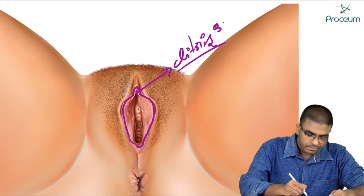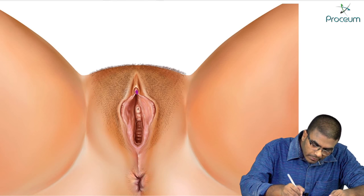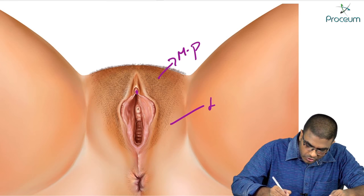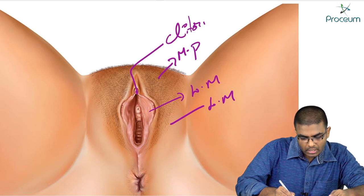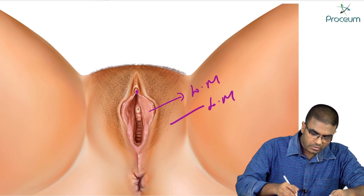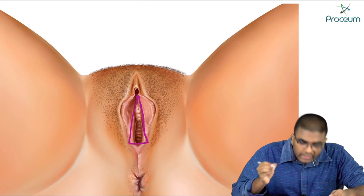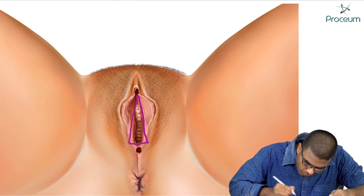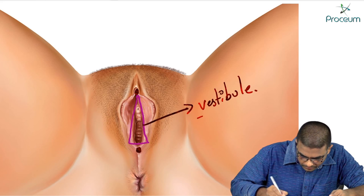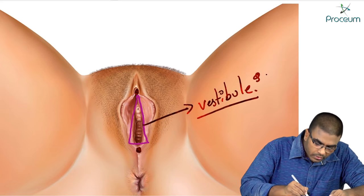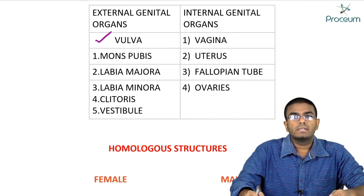This erectile body over which the labia minora fuses anteriorly is known as the clitoris. The vestibule is a triangular space present between the clitoris anteriorly and the fourchette posteriorly. So we have discussed mons pubis, labia majora, labia minora, clitoris, and vestibule.